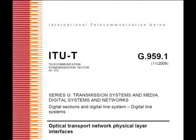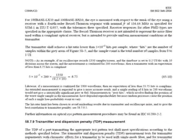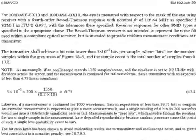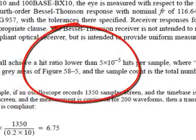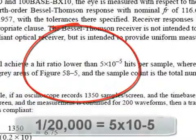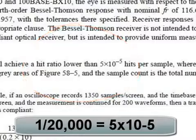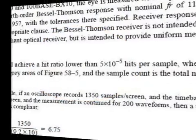This is commonly known as the eye mask hit ratio technique. The most common hit ratio is to allow one in every 20,000 samples to violate the mask. For this hit ratio, as long as the sample size is significantly larger than 20,000, susceptibility to outliers is dramatically reduced and the mask margin results are very repeatable.